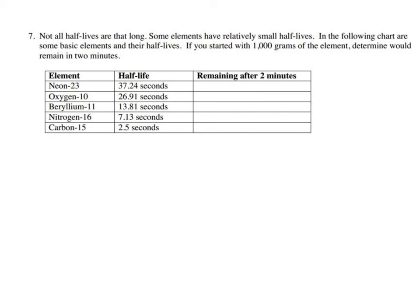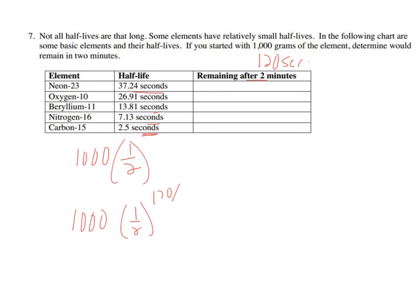For this set of half-life problems, starting with 1000 grams and knowing the half-life, you convert units — for example, two minutes becomes 120 seconds. Then calculate 1000 · (1/2)^(120/37.24) for the first isotope, and 1000 · (1/2)^(120/26.91) for the next, and so on. Pretty straightforward — if you want to see the calculated answers, ask.